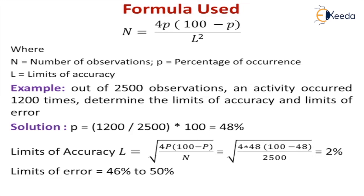That gives 48 percent occurrence. The limits can be calculated by reversing the formula, giving approximately ±2 percent. So, from 46 to 50 percent of the time, that activity is expected to occur over a specified time period.